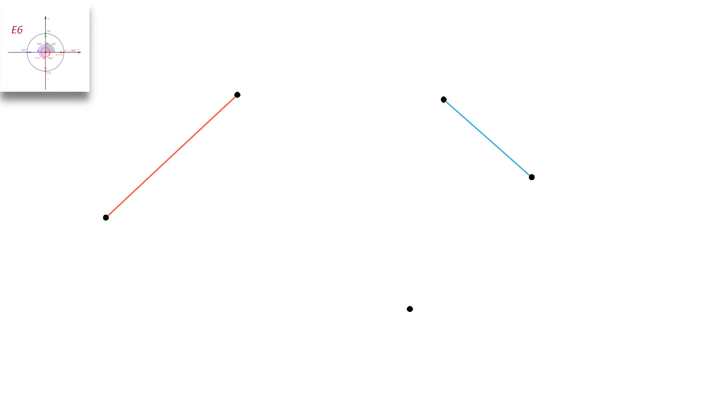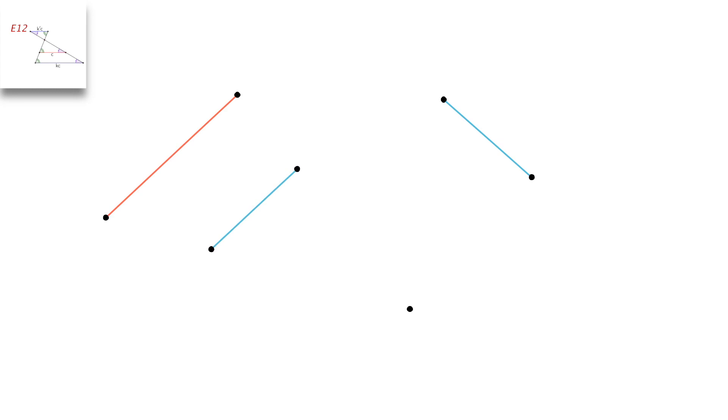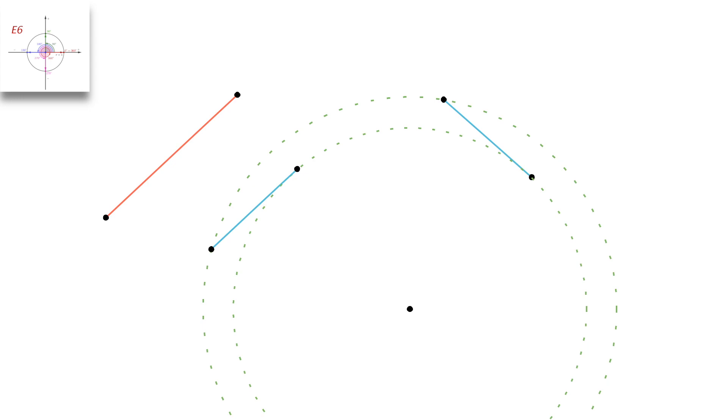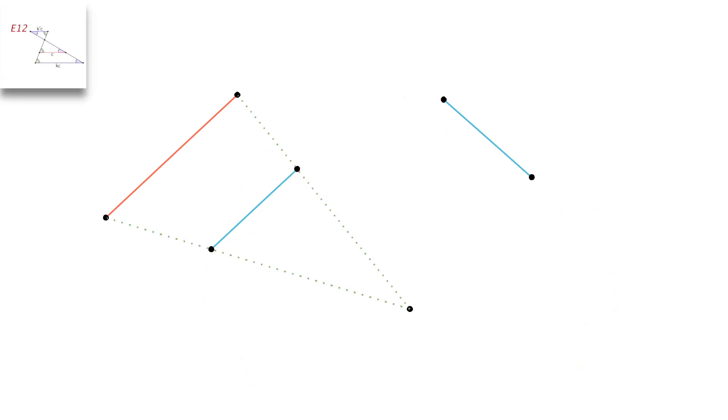Let's see an example. We have a quadrilateral. Say I want to construct a spiral similarity that transforms the blue segment into the red segment. A center of spiral similarity for these two segments is here. So I will first rotate the blue segment about the center, and then I will apply homothety and rescale the segment until it fits the red one. I will draw the lines and circles that define the rotation and the homothety. During the rotation, both points move along an arc of a circle centered at the center of spiral similarity. Then the resulting segment gets scaled up with respect to the same center.